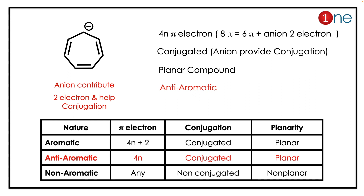To find the aromaticity, you should know the Hückel rule. For aromatic compounds, you need 4n+2 pi electrons; for anti-aromatic, you need 4n pi electrons. Here you have a tricky situation — an anion is present. The anion contributes two electrons and also helps with conjugation.